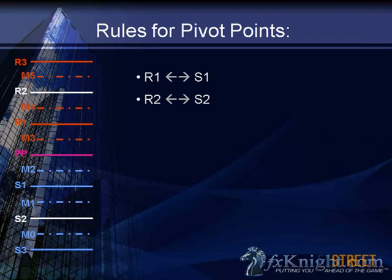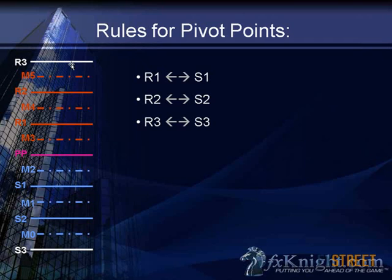This stuff really isn't that complicated once somebody explains it to you. A lot of times people go off assumptions with pivot points, and that's when mistakes happen. If you make it all the way down to S3 and get a bounce, you're going to go to R3. If you get a bounce down at R3, you're probably going to go to S3. It's always the corresponding number.